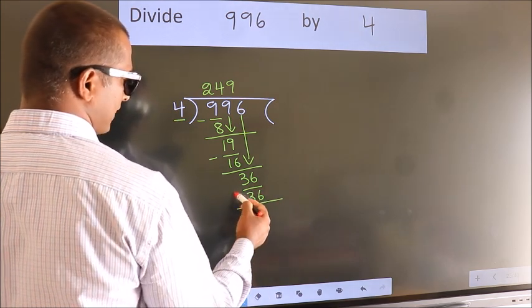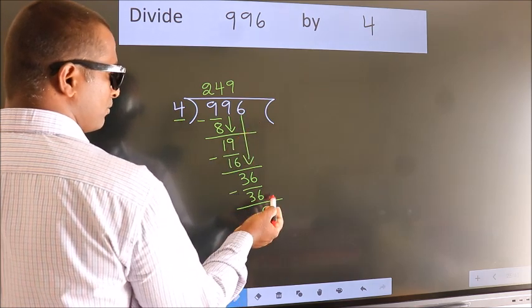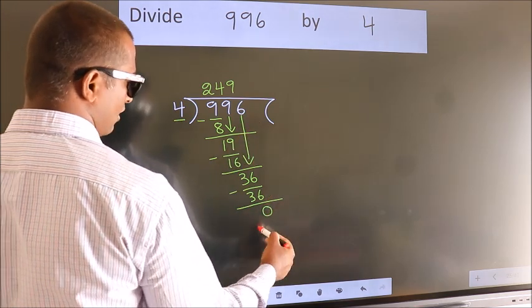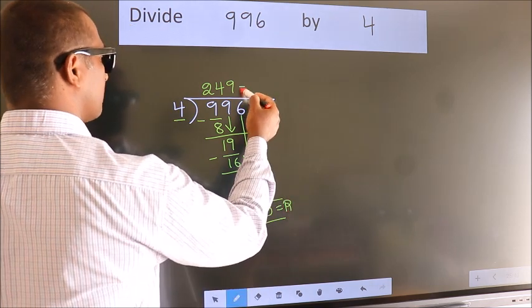Now we subtract, we get 0. No more numbers to bring it down. So we stop here. This is our remainder. This is our quotient.